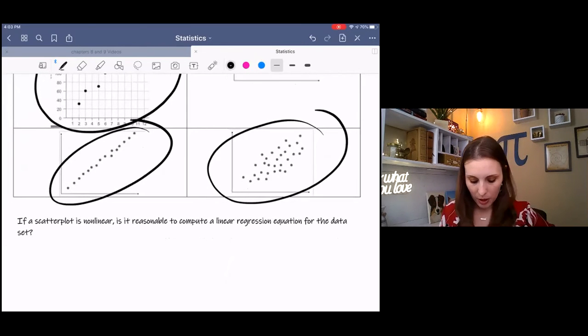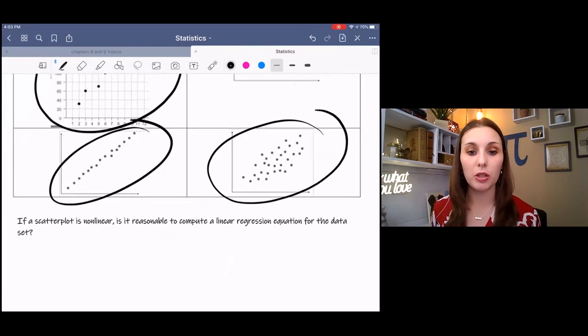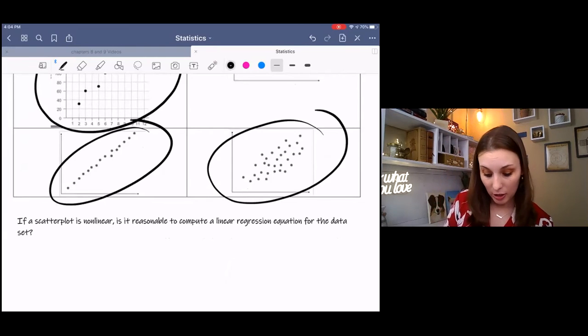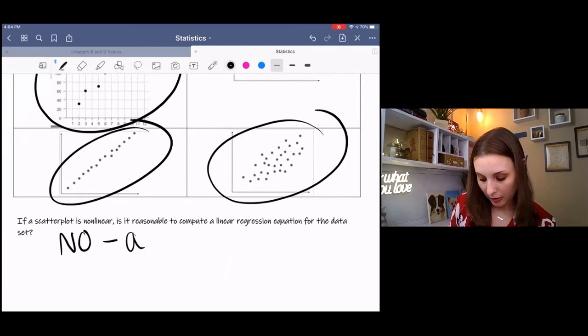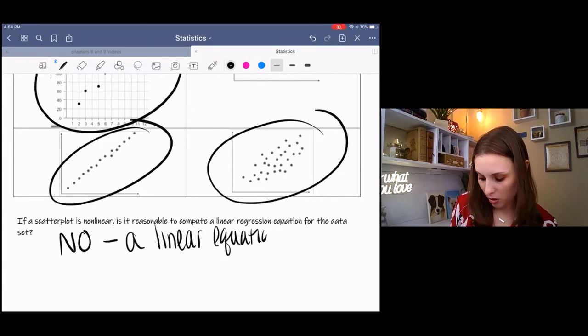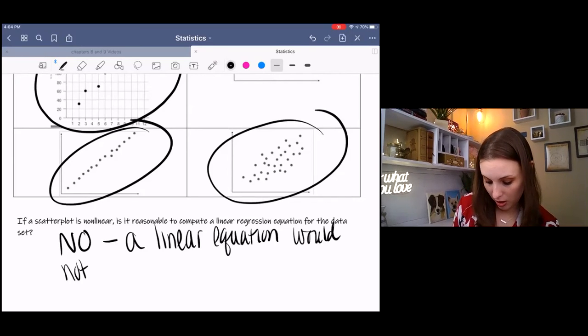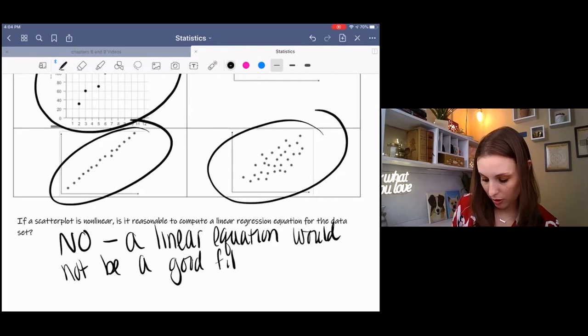If a scatterplot is nonlinear, is it reasonable to compute a linear regression equation for the data set? The answer is no. A linear equation would not be a good fit for a nonlinear scatterplot.